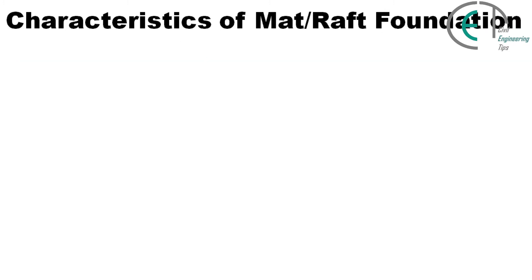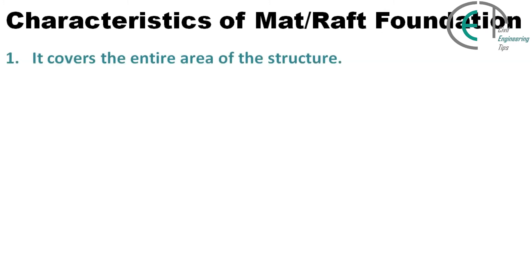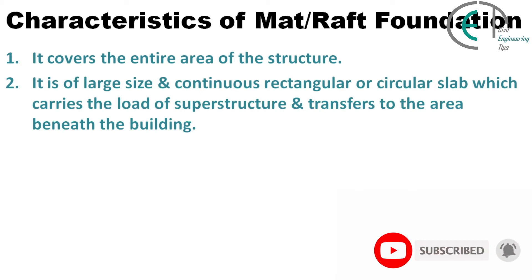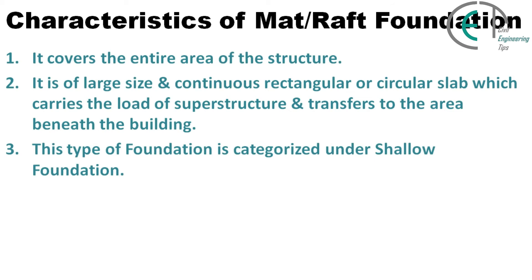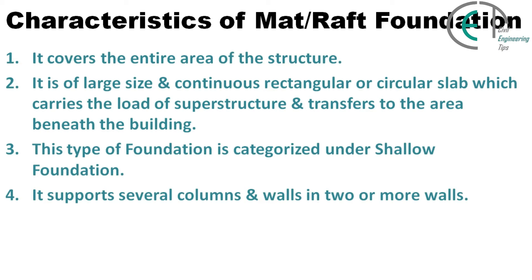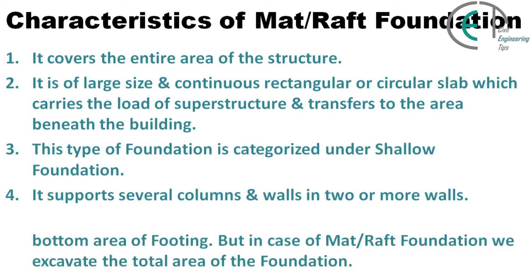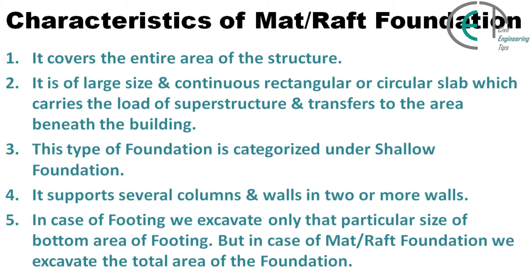Now let's discuss the characteristics of mat or raft foundation. It covers the entire area of the superstructure. It is a large-size, continuous rectangular or circular slab which carries the load of the superstructure and transfers it to the area beneath the building. This type of foundation is categorized under shallow foundation and supports several columns and walls. In case of footing, we excavate only the particular bottom area of the footing, but in case of mat or raft foundation, we excavate the total area of the foundation.